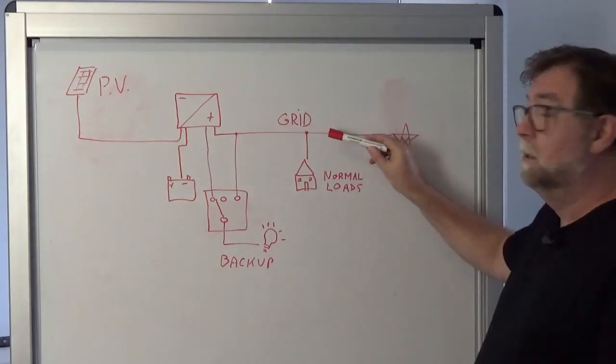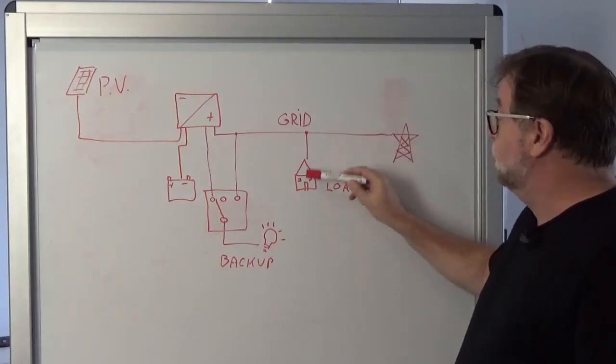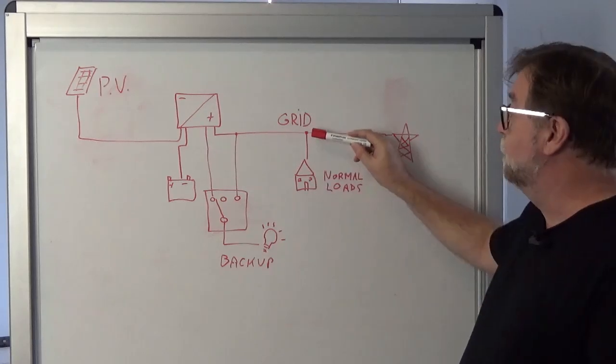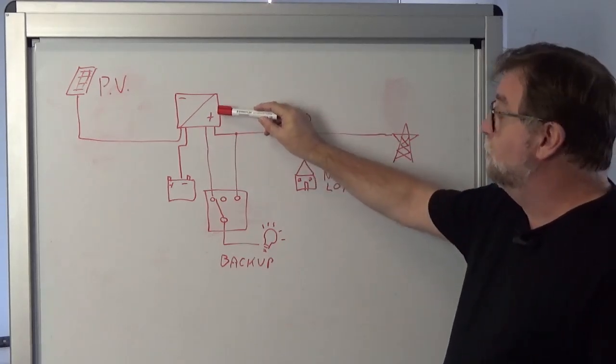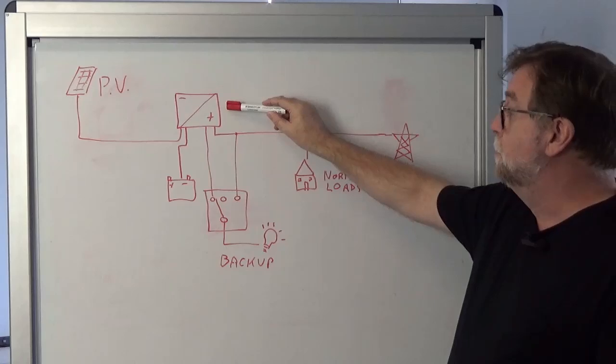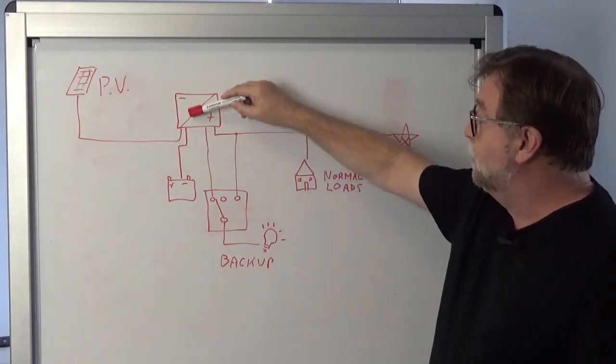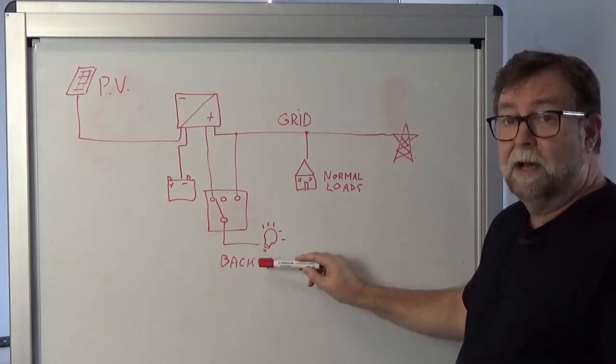Normal grid supply comes in from the grid. You have your normal loads on the grid supply and you have the AC supply to the inverter as normal. You've got a PV and a battery plugged in as well and you've got a backup circuit.